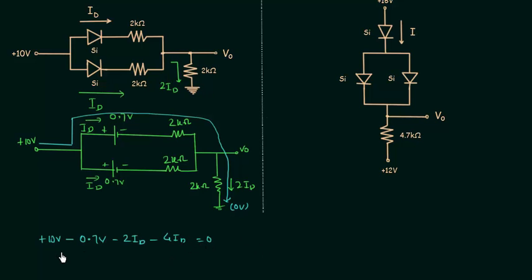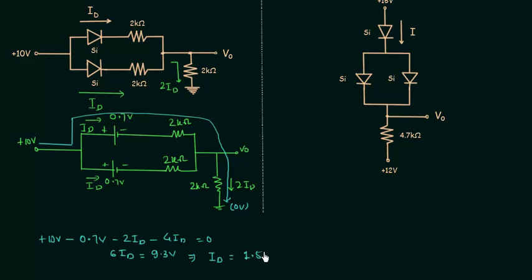From this equation we can calculate ID. 6ID is equal to 9.3V, which implies ID is equal to 1.55mA. This is the answer.